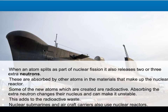One problem with nuclear power is the radioactive waste and radioactive materials that can be made. When an atom splits as part of the fission process, it releases two or three extra neutrons. These are absorbed by other atoms in the materials that make up the nuclear reactor. Some of the new atoms that are created can be radioactive, because absorbing an extra neutron changes their nucleus and can make them unstable. This adds to the radioactive waste.